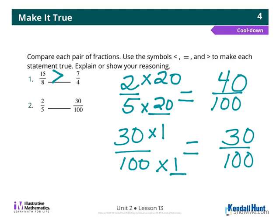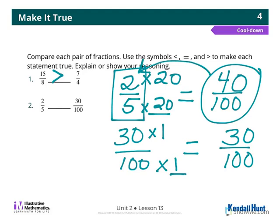Now, I have two fractions I can compare. 40 hundredths and 30 hundredths. 40 hundredths is greater than 30 hundredths. But, 40 hundredths is my equivalent fraction. So, if 40 hundredths is bigger, then 2 fifths is my greater fraction.